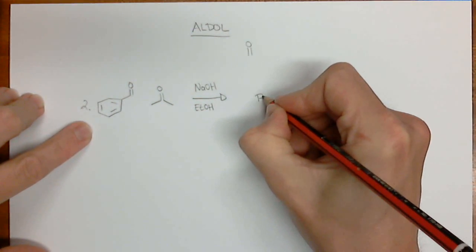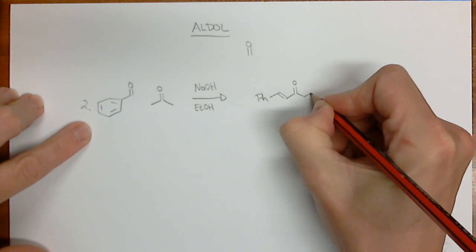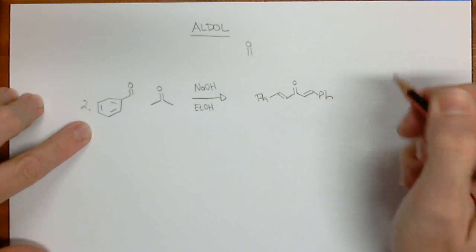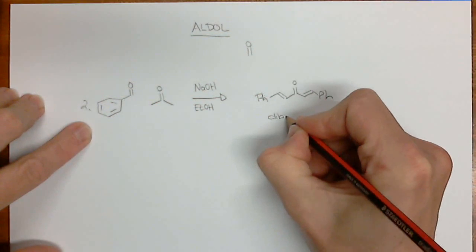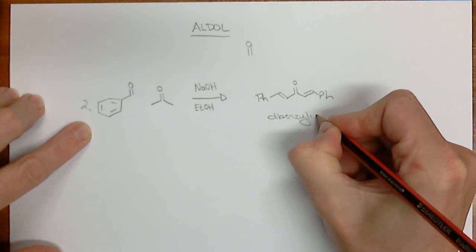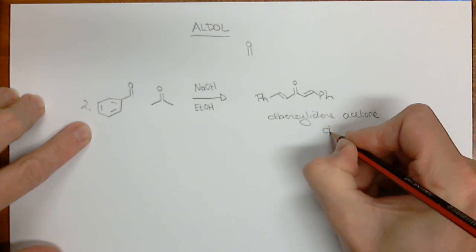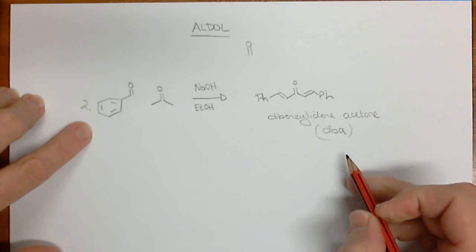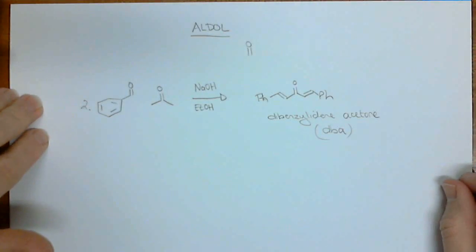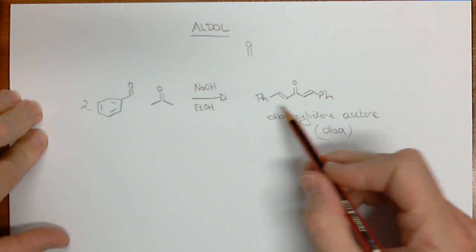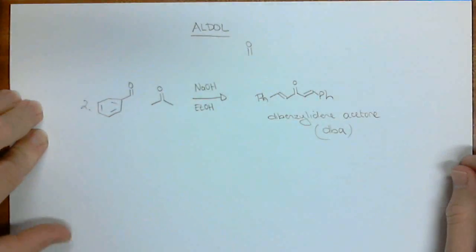The final product that we get looks like this. And its trivial name is dibenzialidine acetone, and also DBA. It is actually a ligand that's used to complex to palladium, so it's actually quite a useful molecule. They use it so you can work with palladium, palladium zero, so it's a useful ligand. But it's actually a very simple molecule to make. It just literally falls out of solution.